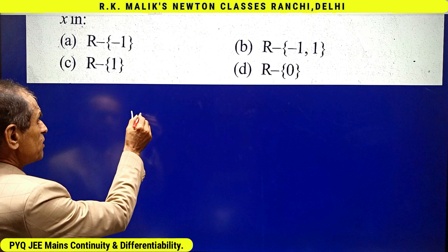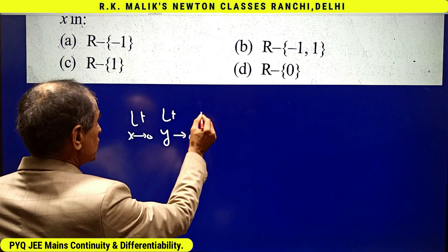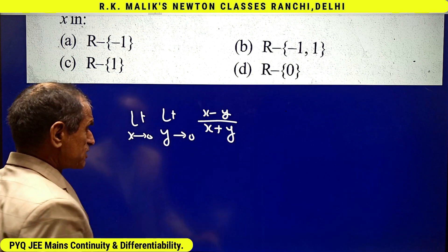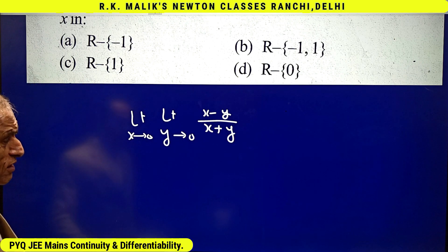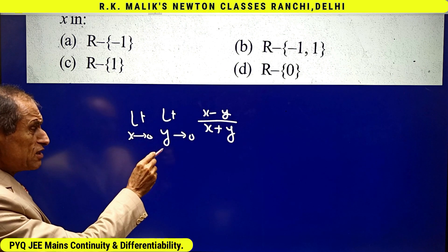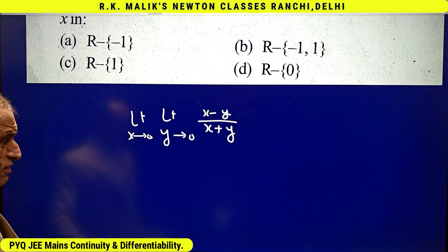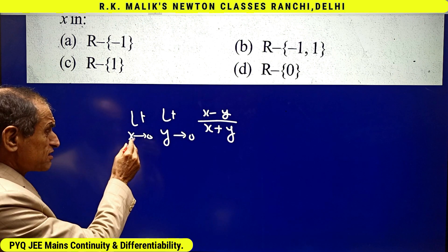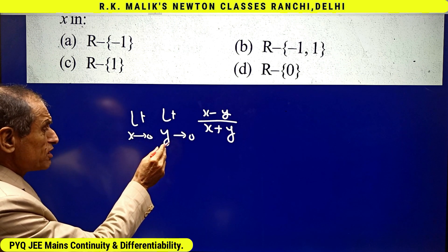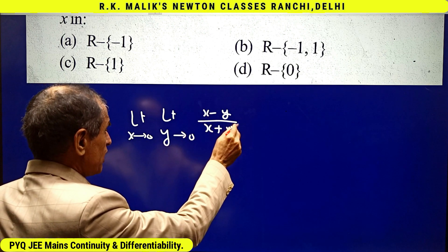Suppose the question is: limit x tends to 0, limit y tends to 0 of (x minus y) upon (x plus y). I will show that the order of limits is also important — that is, if we change the order of limits, the answer may change. Here, x is coming nearer and nearer to 0 and y is also coming nearer and nearer to 0, and we have to find which number this approaches.